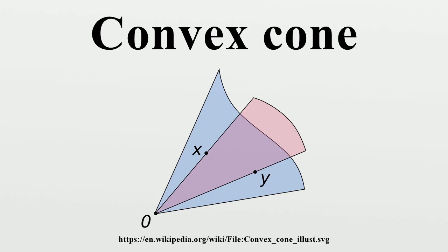A more general example is the set of all vectors lambda x such that lambda is a positive scalar and x is an element of some convex subset X of V. In particular, if V is a normed vector space and X is an open ball of V that does not contain zero, this construction gives an open convex circular cone.